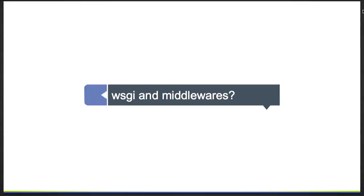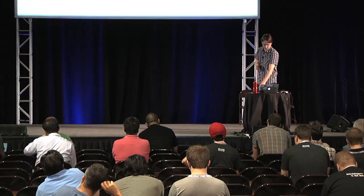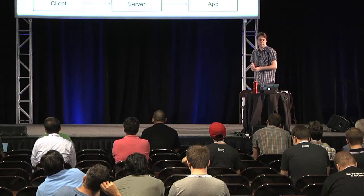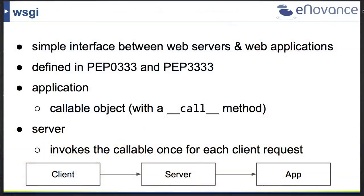Let's have a look at how the web standard gateway interface works and what middlewares are about. The web standard gateway interface is a simple interface between web servers and web applications. It was defined as Python Enhancement Proposal 333, and also updated for Python 3 recently. This interface defines an application and a server — the application has a callable object with a call method, and the server invokes this callable for each client request.